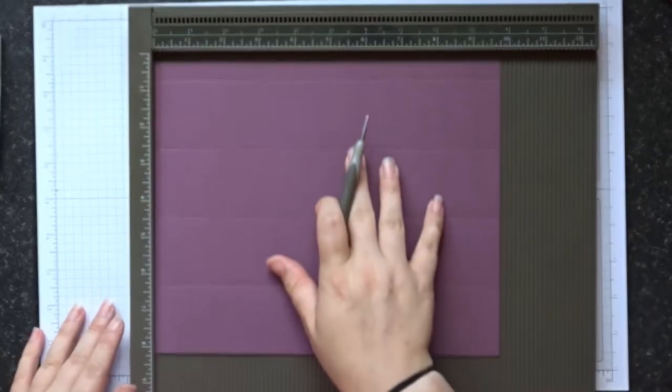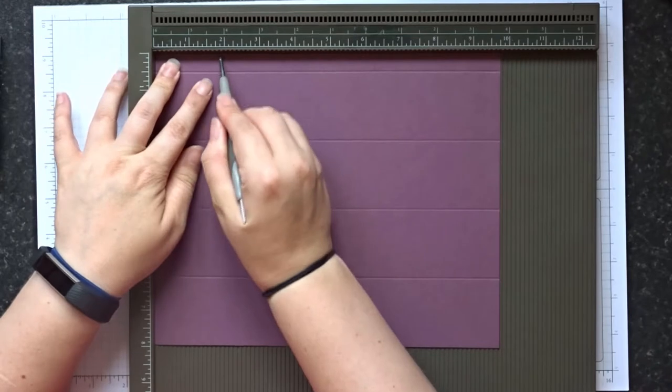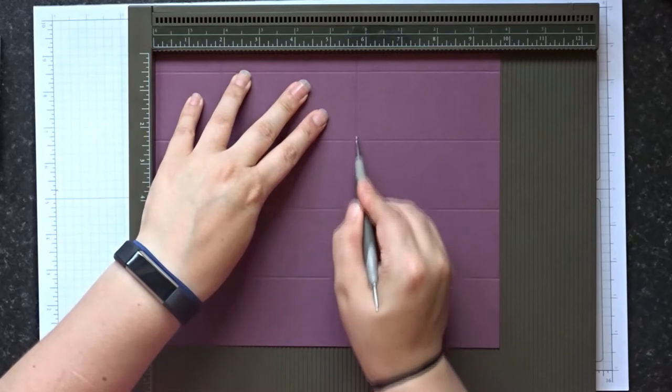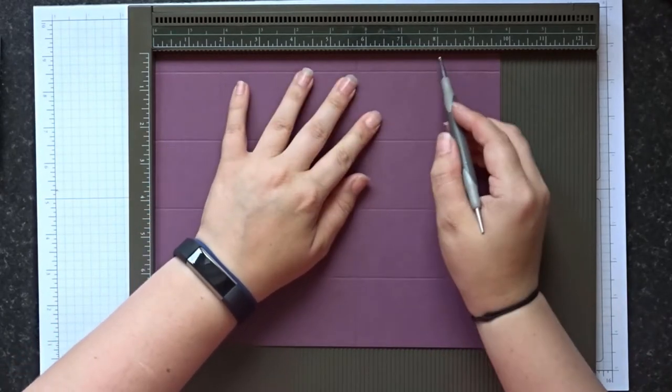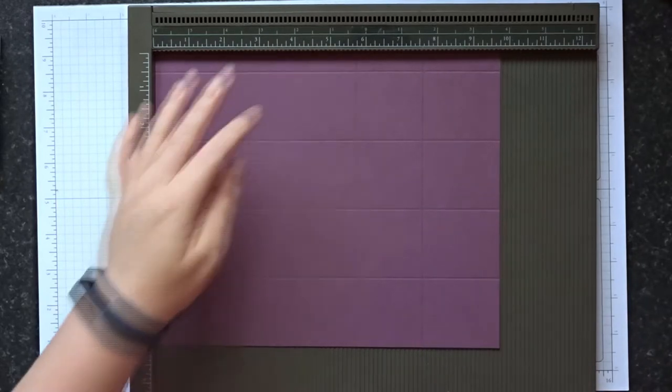Then you're going to rotate it 90 degrees and on the long side, you're going to do one and seven-eighths of an inch, five and three-quarter inches, and seven and five-eighths.